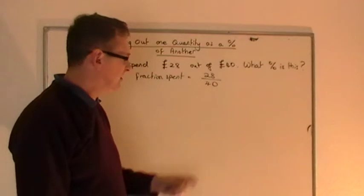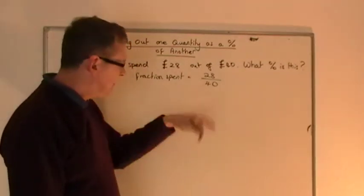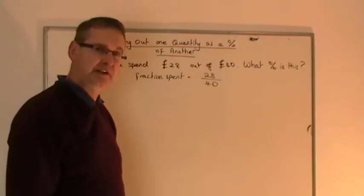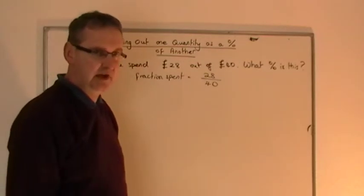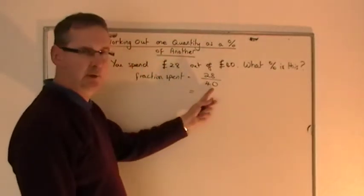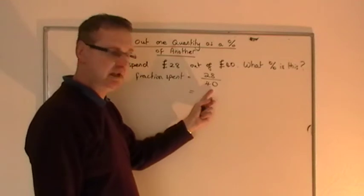Some of you might realize that to turn 40 into 100, you have to times it by 2.5. And then you'd have to times the 28 by 2.5 as well. But it's not very nice to do that. Times it by 2.5 is not nice. So how could we do it?